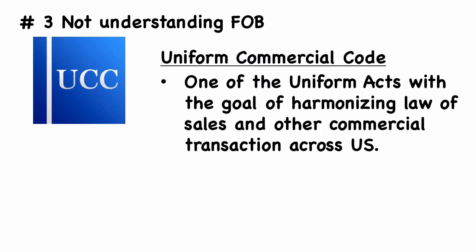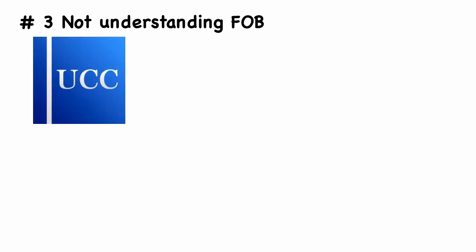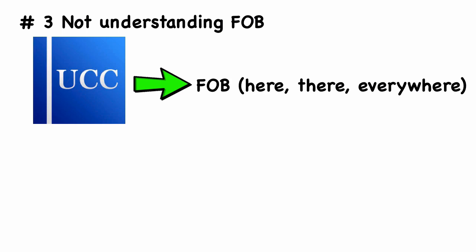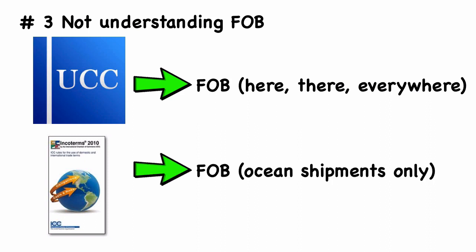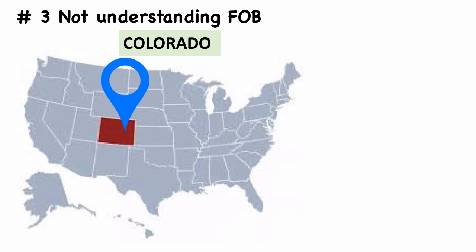In the third example, which is not understanding FOB, the author provided an example whereby some companies in the US use the Uniform Commercial Code (UCC), which is one of the uniform acts with the goal of harmonizing law of sales and other commercial transactions across the US. The difference between UCC and Incoterms is that UCC allows for FOB here, there, and everywhere, according to the author. However, Incoterms 2010 restricts the use of FOB to ocean shipments only. In one example, the author saw a letter of credit using FOB Colorado — but there are no ocean vessels in Colorado because there are no ports.